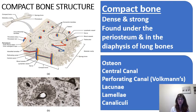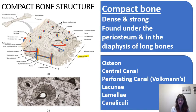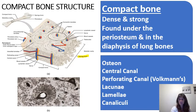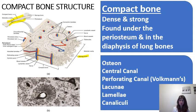Compact bone is sometimes referred to as cortical bone; spongy bone is also referred to as cancellous bone. Compact bone surrounds bones of all shapes, and in long bones the diaphysis — the shaft — is where we find the thickest compact or cortical bone. Compact bone is very dense and strong, found just deep to the periosteum.